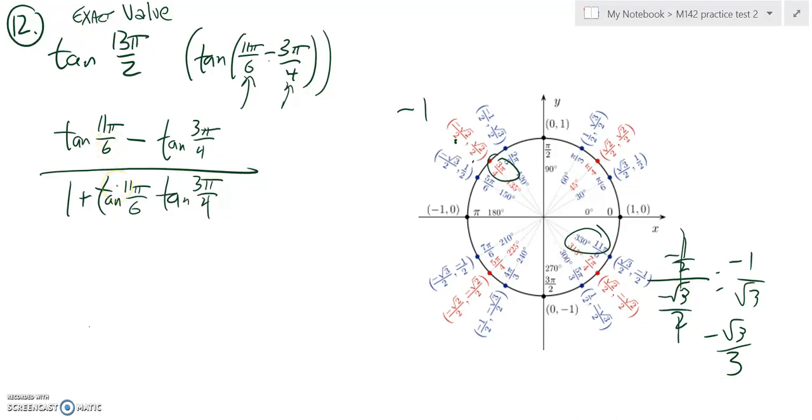So tangent of 11π over 6 is negative root 3 over 3. So that's going to go here, minus tangent of that is negative 1, all over 1, plus opposite operator, the first tangent multiplied by the second tangent. So notice what I have here then is negative root 3 over 3, plus 1, over 1, plus a negative times a negative is positive, root 3 over 3.